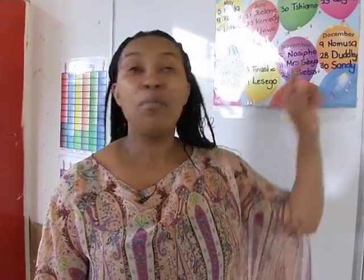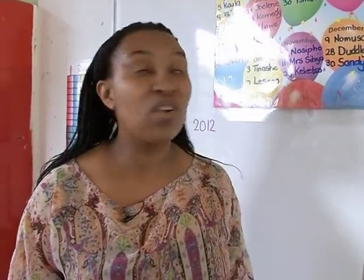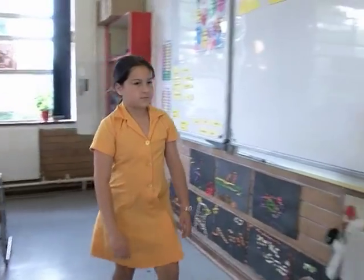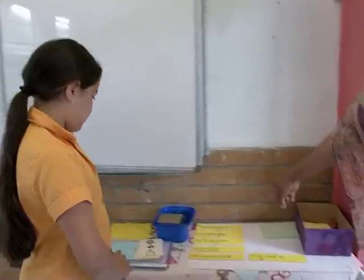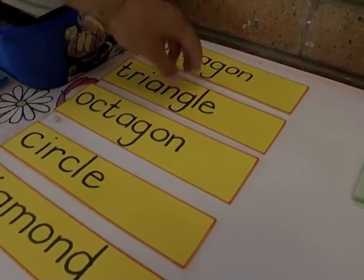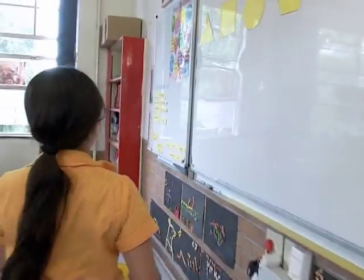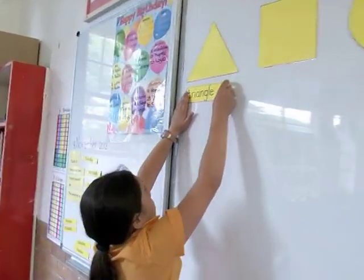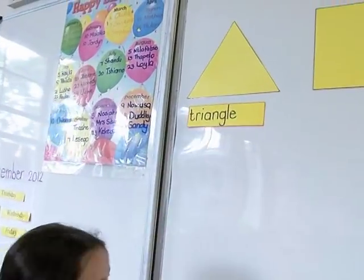This is a triangle. How many sides does a triangle have, Sandy? A triangle has three sides. Sandy, come forward please. I want you to choose the correct card and put it under the triangle. I'm going to do a symmetry lesson. It will integrate with language as well as with the visual art aspect of life skills.